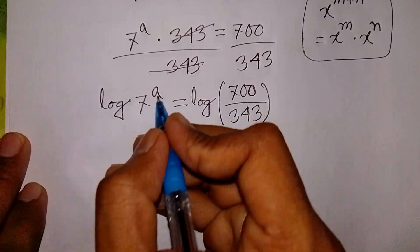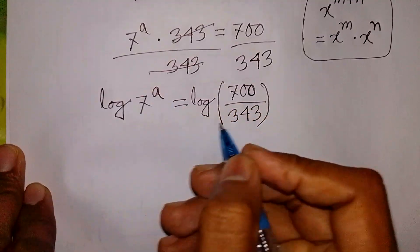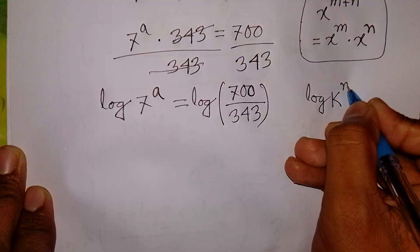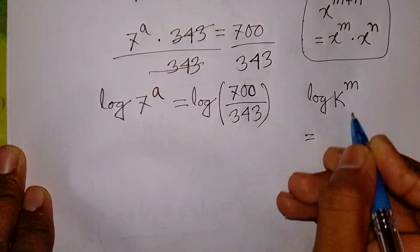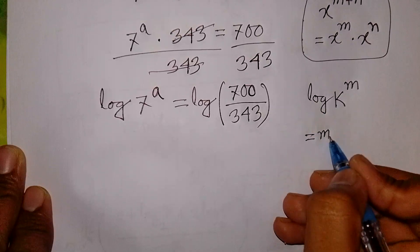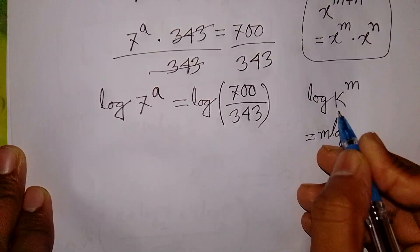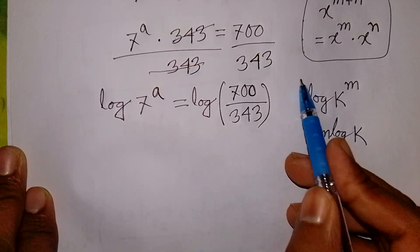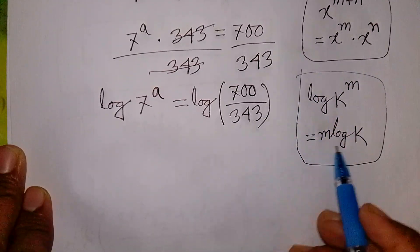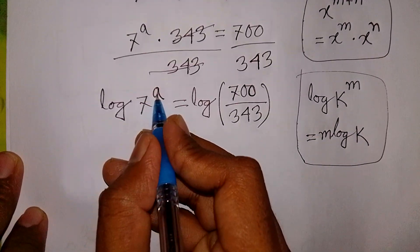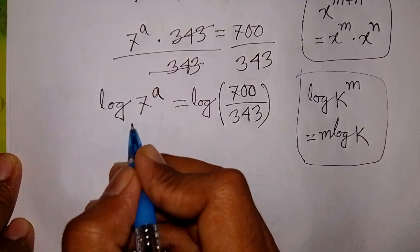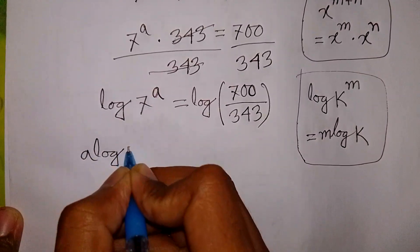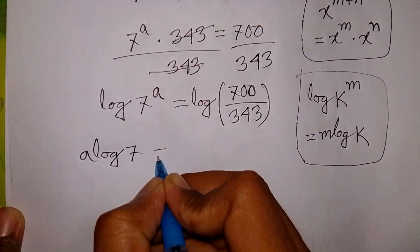In the next step, we apply the rule that log of k to the power m is equal to m times log k. This power m moves to the front. So, according to this rule, the power a will move to the front, and it can be written as a times log 7 on the left side.